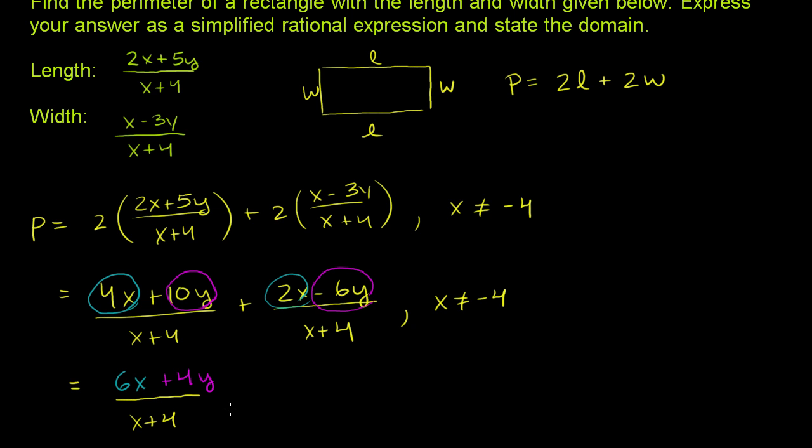And of course, we're still constraining our domain. x cannot be equal to negative 4. So that's our simplified expression for the perimeter.